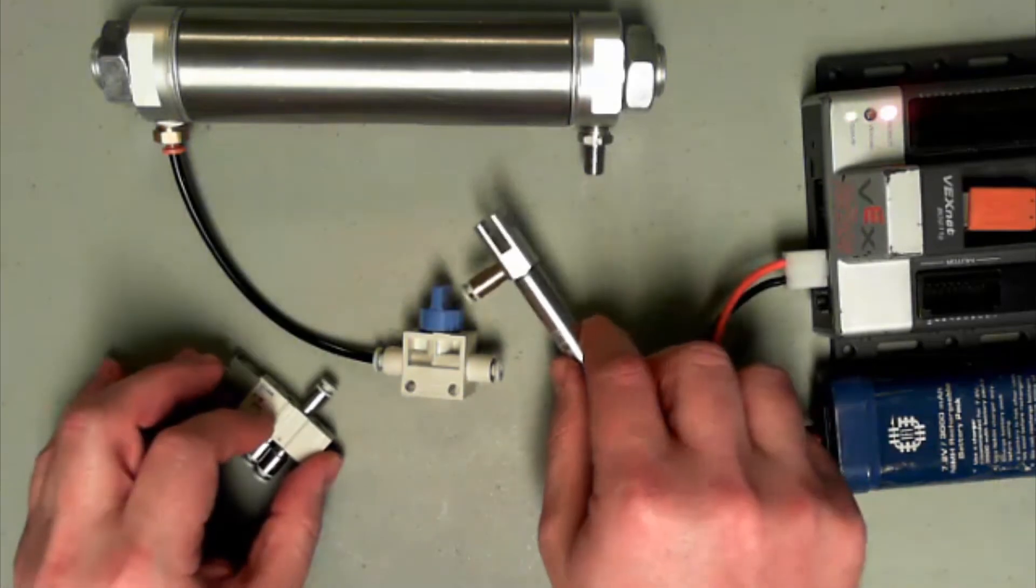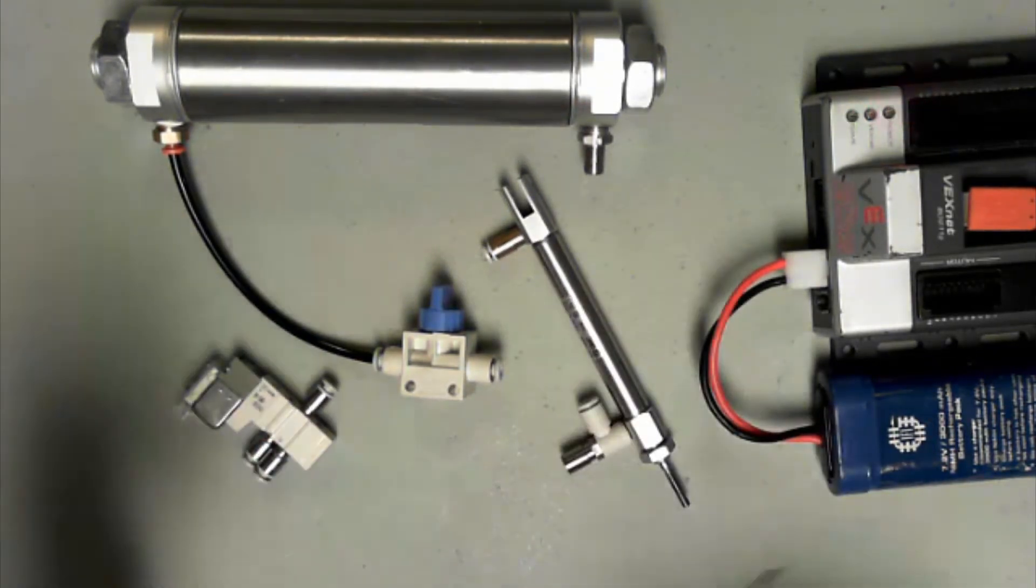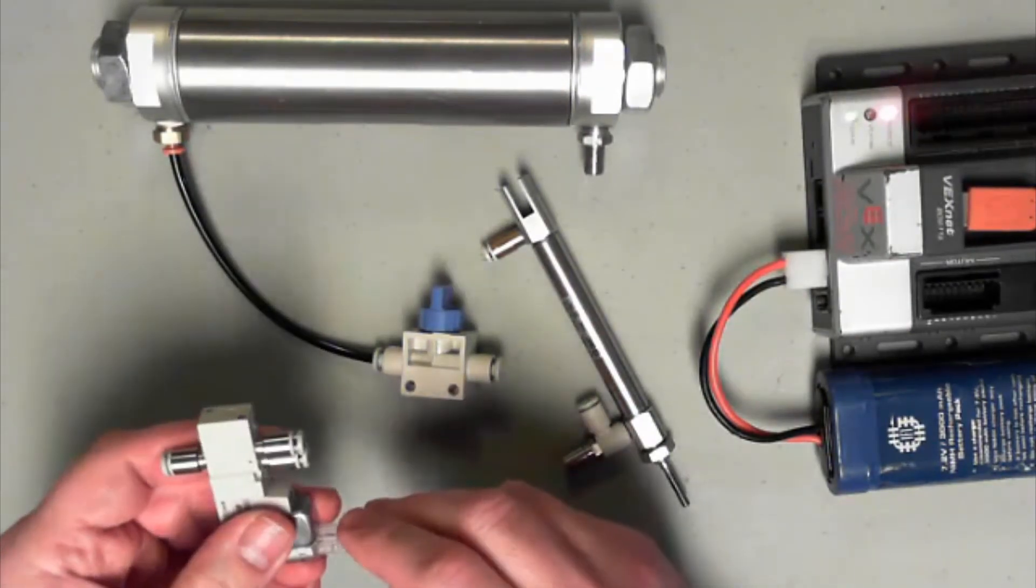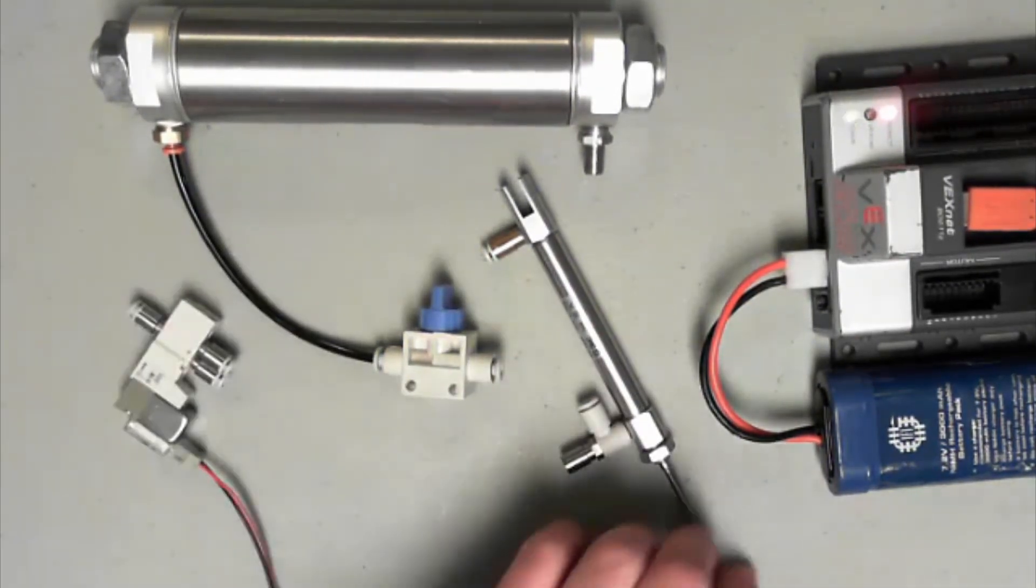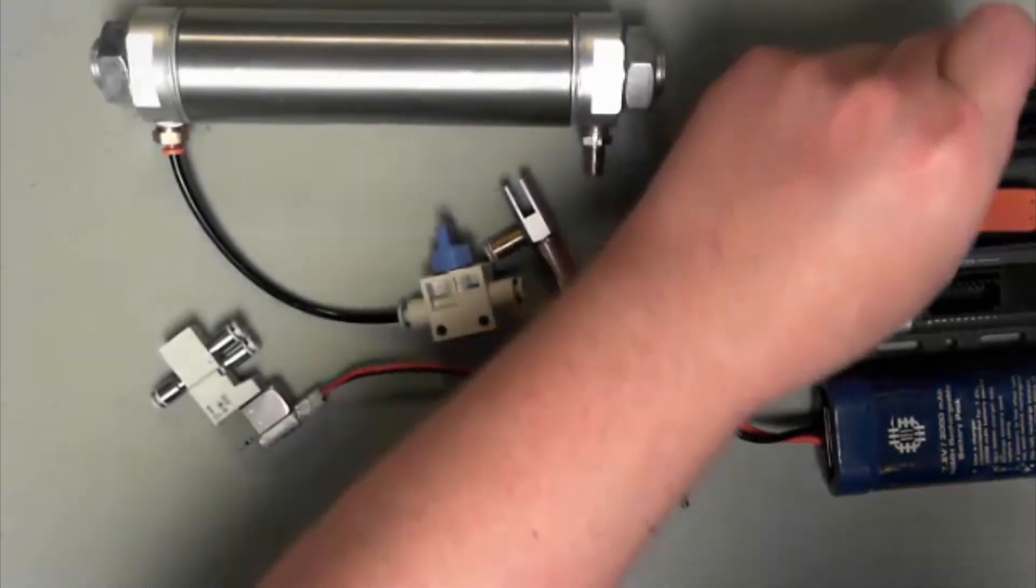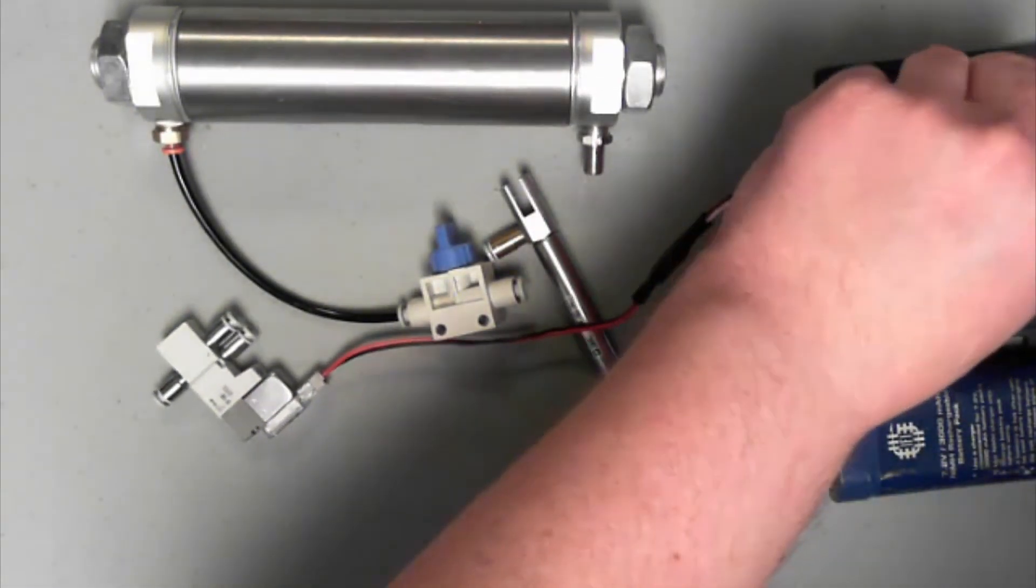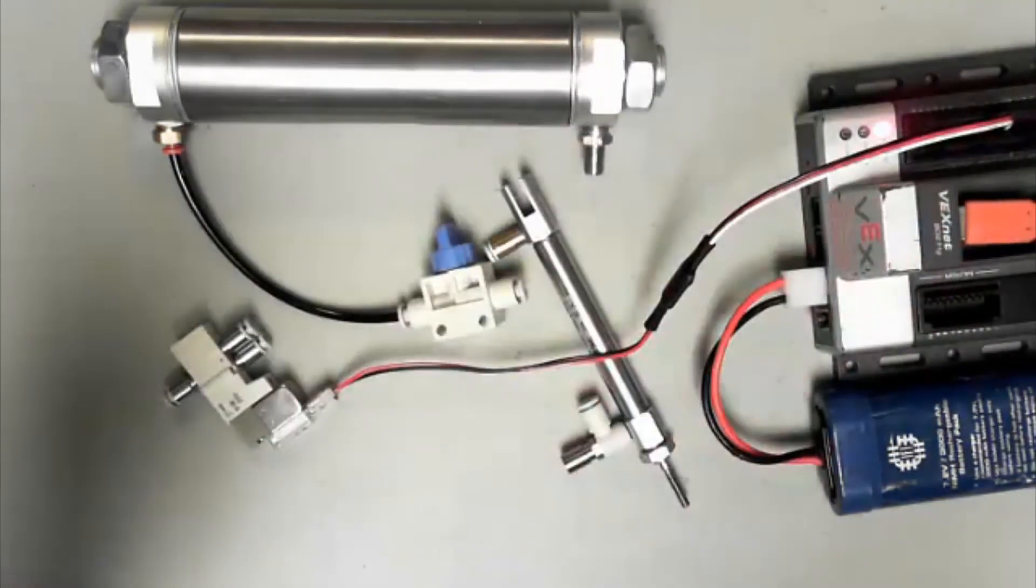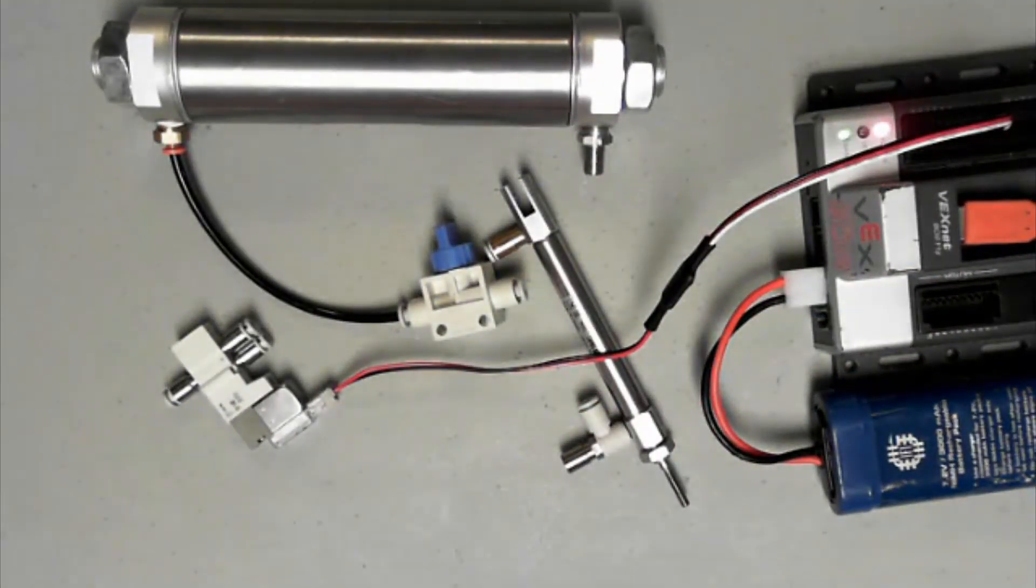So we have our solenoid. We have our double acting cylinder. And we have the same cable. So it's going to plug in the same way. I'm going to plug it into the same port. And now all we have to do is plug it in.